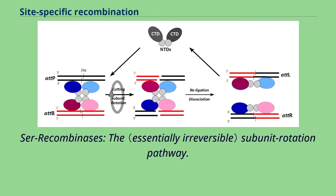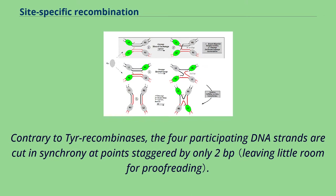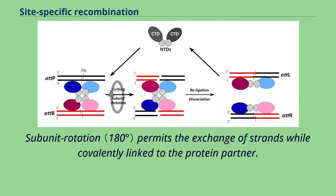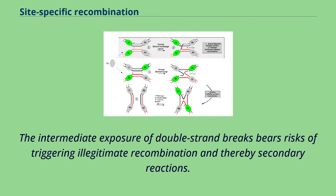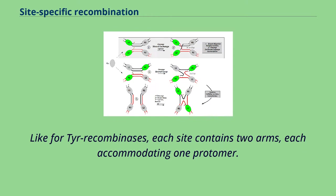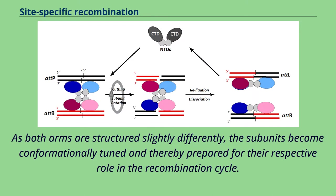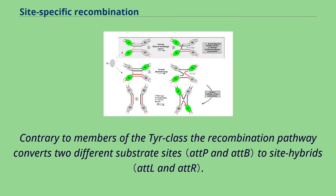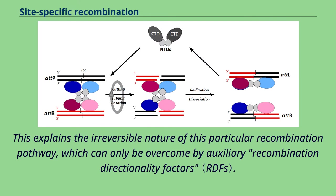Figure 2: Tyrosine recombinases — the subunit rotation pathway. Contrary to tyrosine recombinases, the four participating DNA strands are cut in synchrony at points staggered by only 2 BP. Subunit rotation permits the exchange of strands while covalently linked to the protein partner. The intermediate exposure of double strand breaks bears risks of triggering illegitimate recombination and thereby secondary reactions. Here, the synaptic complex arises from the association of preformed recombinase dimers with the respective target sites. Like for tyrosine recombinases, each site contains two arms, each accommodating one protomer. As both arms are structured slightly differently, the subunits become conformationally tuned and thereby prepared for their respective role in the recombination cycle. Contrary to members of the tyrosine class, the recombination pathway converts two different substrate sites to site hybrids. This explains the irreversible nature of this particular recombination pathway, which can only be overcome by auxiliary recombination directionality factors.